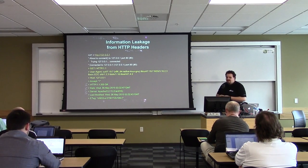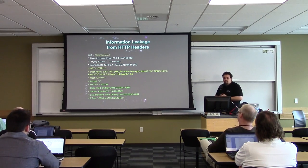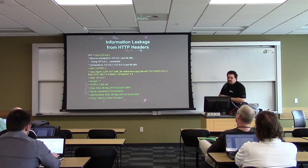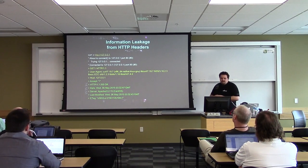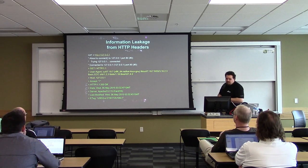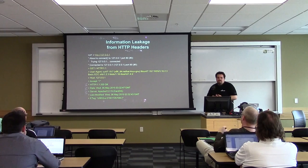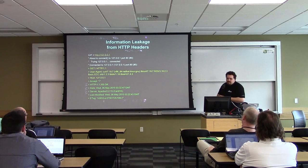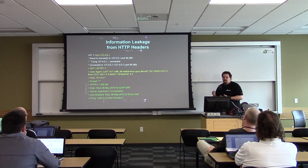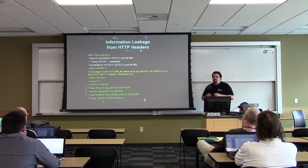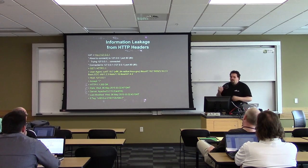Looking at HTTP headers — the yellow is my request, the green is the response. Without those settings, you can see it says Apache version 2.2.15 and the OS. That's giving away your operating system and Apache version — two things you don't want to tell potential attackers.